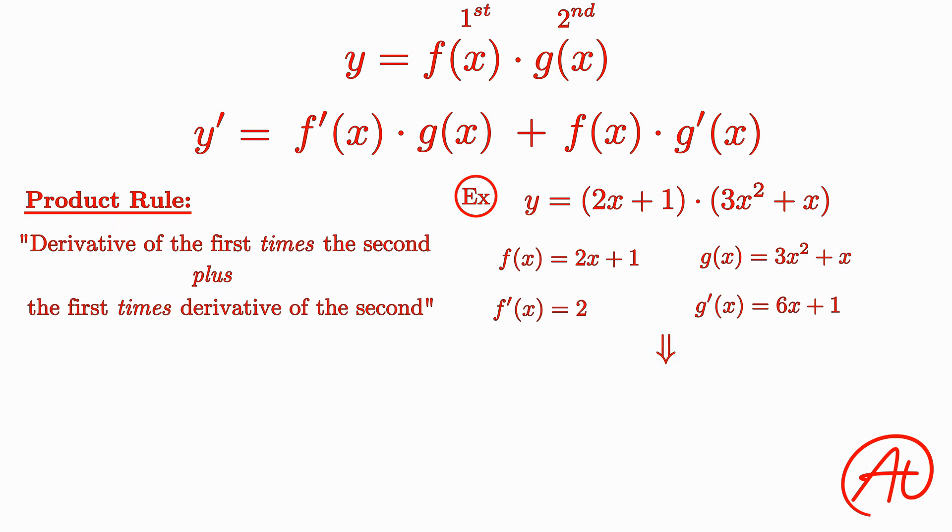Plugging each of these into our product rule formula, we get that the overall derivative is y prime equals 2 times (3x squared plus x) plus (2x plus 1) times (6x plus 1). Boom! It's that easy.